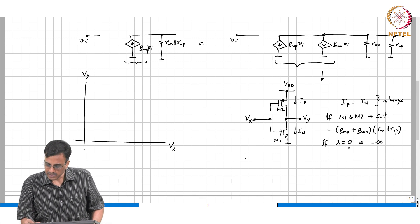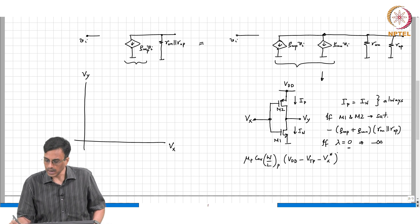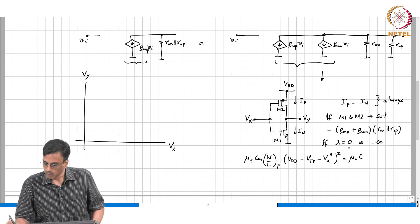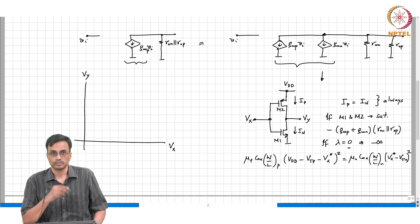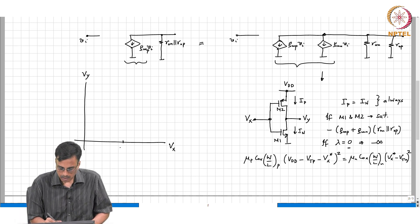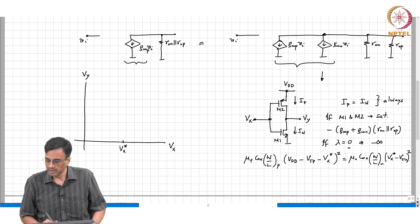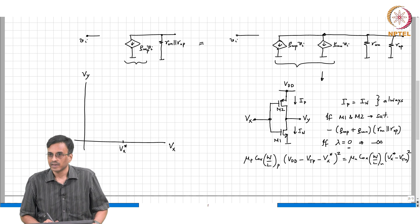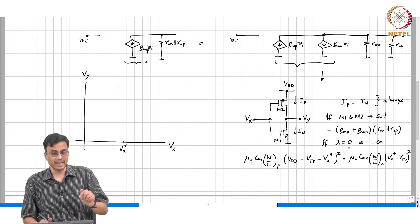To find VX star, we equate the currents: mu_p * C_ox * (W/L)_PMOS * (VX star)^2 must equal mu_n * C_ox * (W/L)_NMOS * (VX star minus VTN)^2. At the magic voltage VX star, the two currents are exactly equal and both transistors are operating in saturation, so the incremental gain is infinite when lambda is zero.